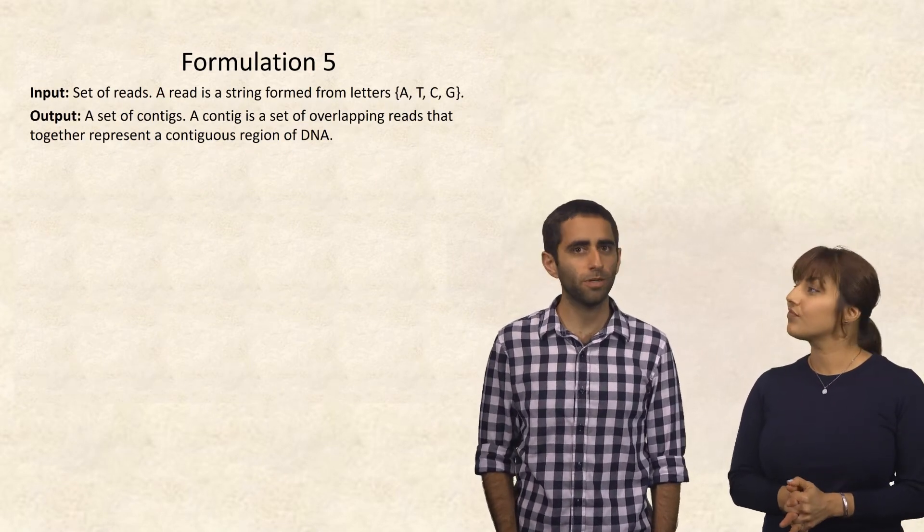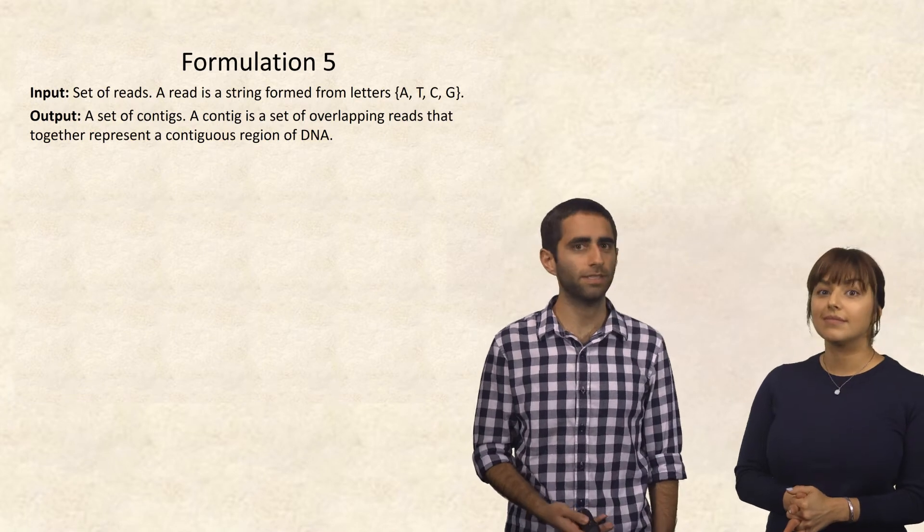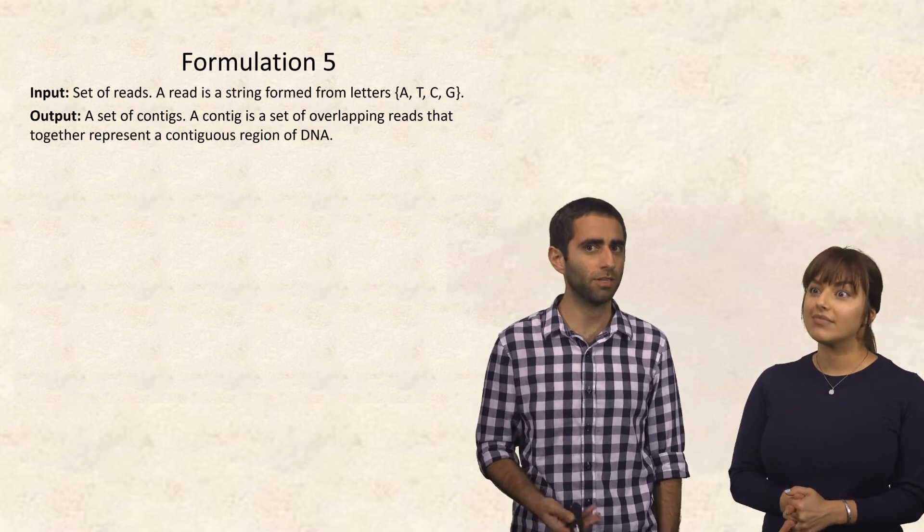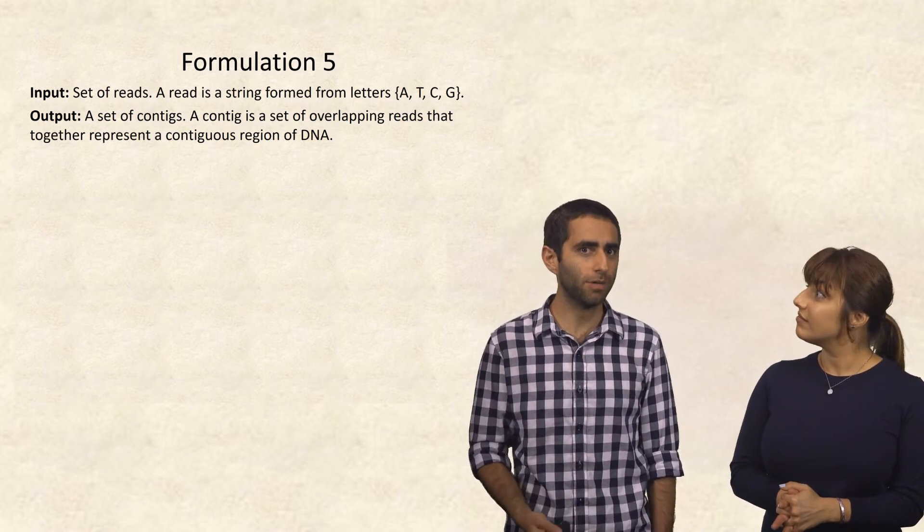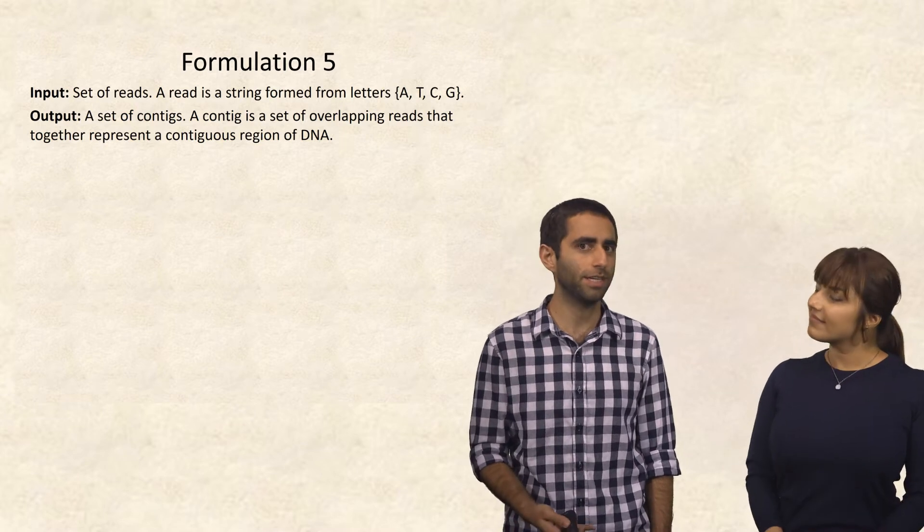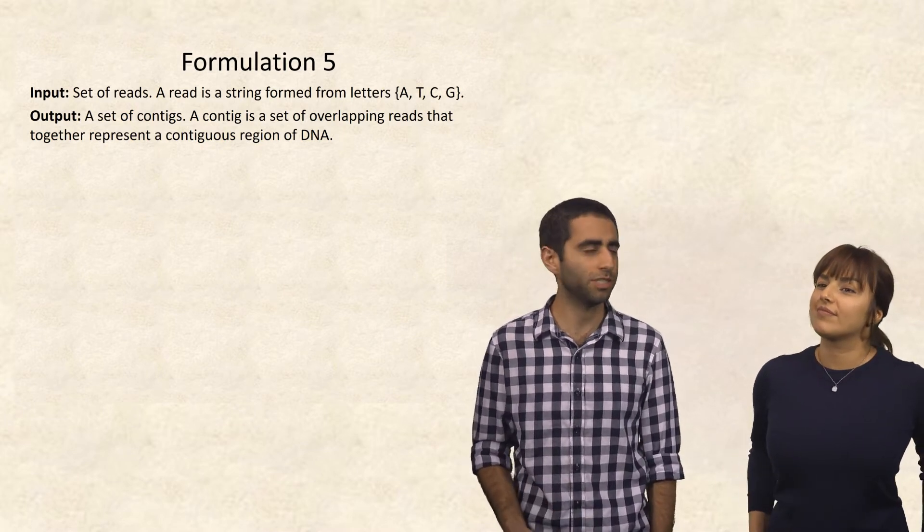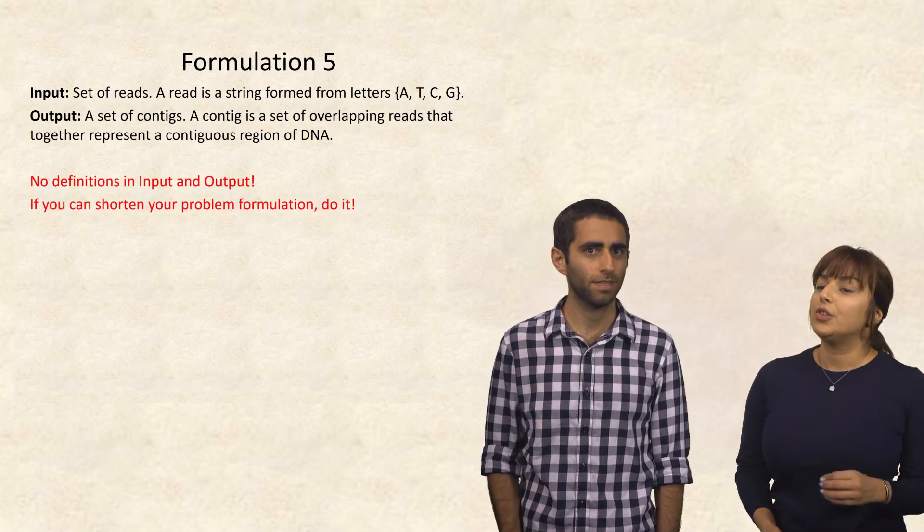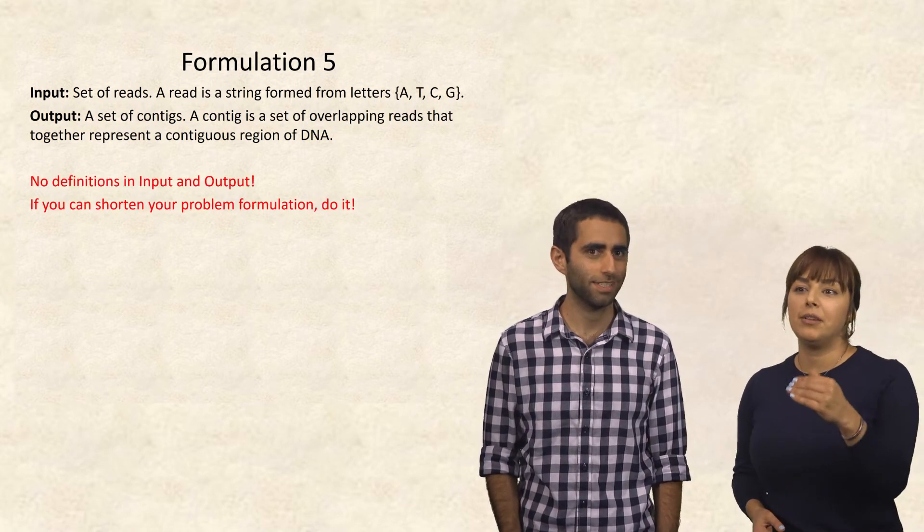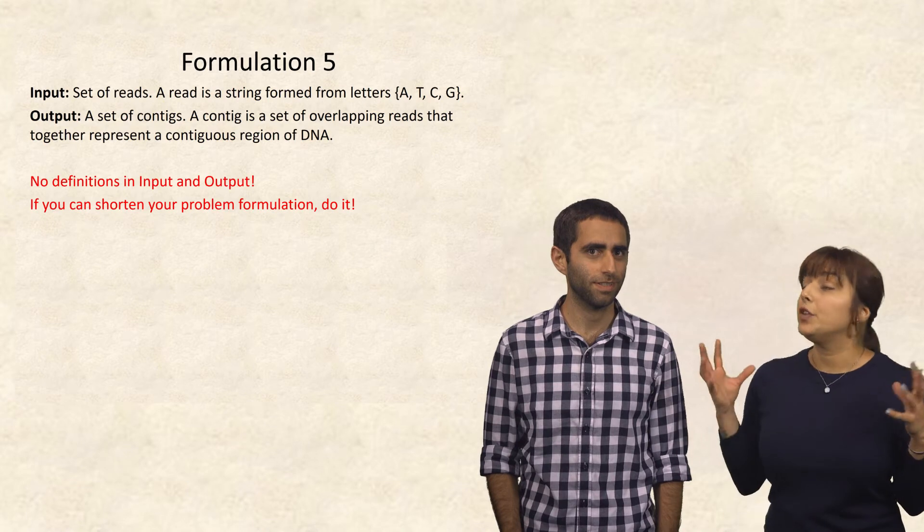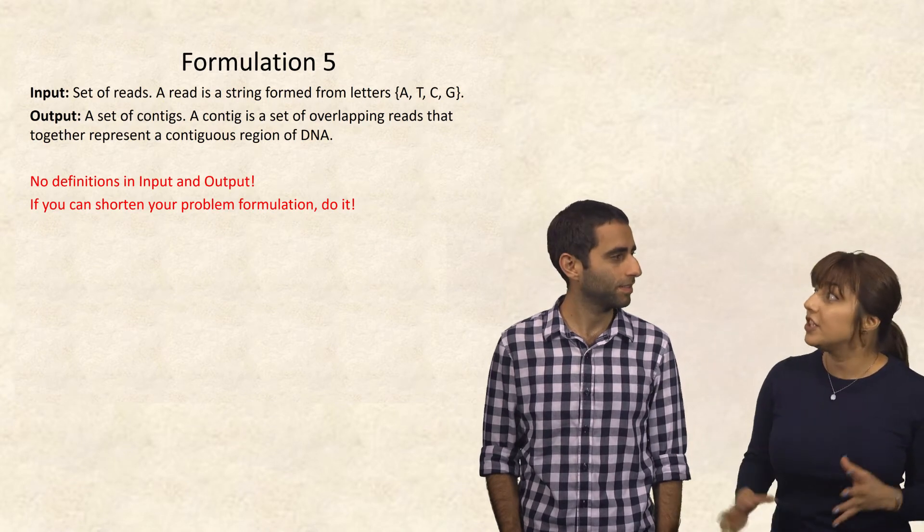So what if now the input was a set of reads, where a read is defined as a string formed from the letters ACGT, and then the output is a set of contigs, where a contig is a set of overlapping reads that together represent a contiguous region of DNA? We do not provide definitions in the input and output. And if you can shorten your problem formulation, do it.